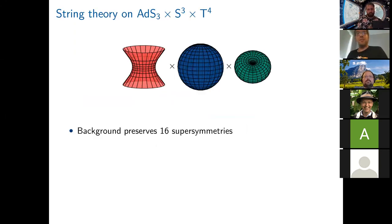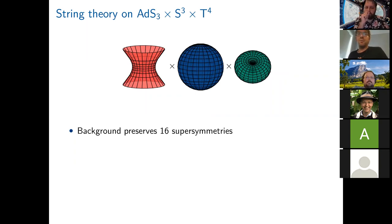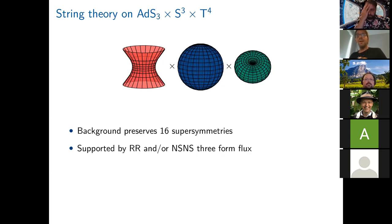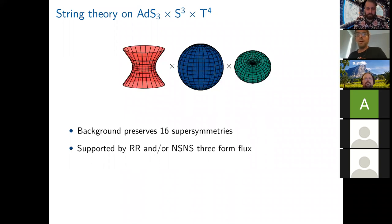I will be talking today only about string theory on AdS3 times S3 times T4. It's a background that preserves 16 supersymmetries. There's also an S3 times S1 background instead of the T4 — many things are similar in that case, but this case is a bit simpler. This background can be supported by Ramond-Ramond fluxes, by Neveu-Schwarz fluxes, or by a mixture of the two. Because there are two three-forms in type IIB string theory, you can turn them both on and still preserve all 16 supersymmetries.